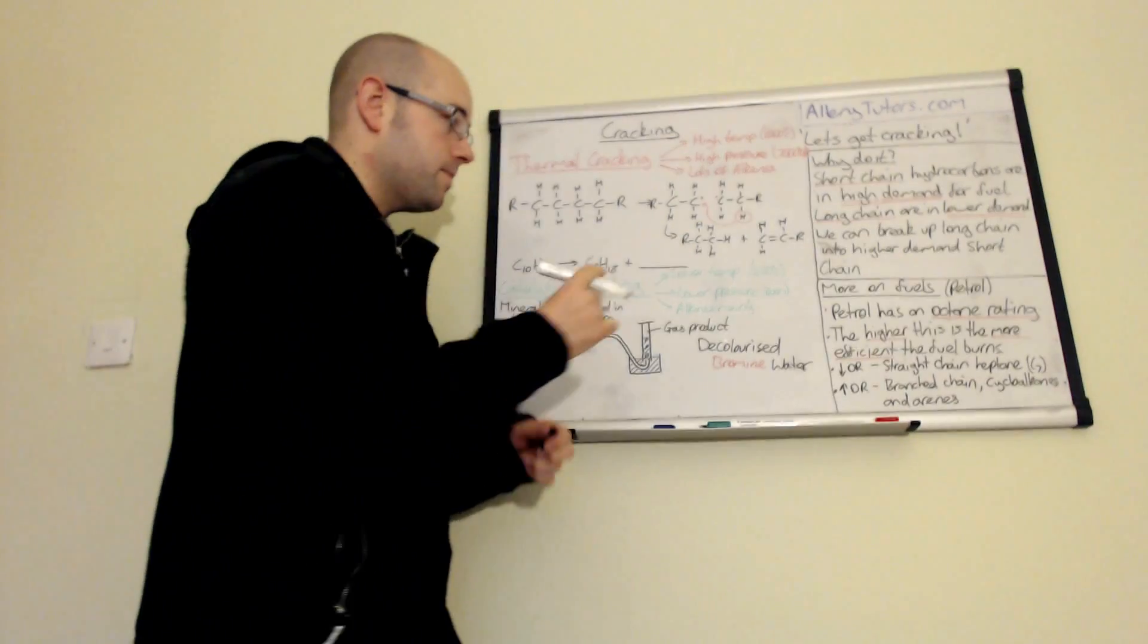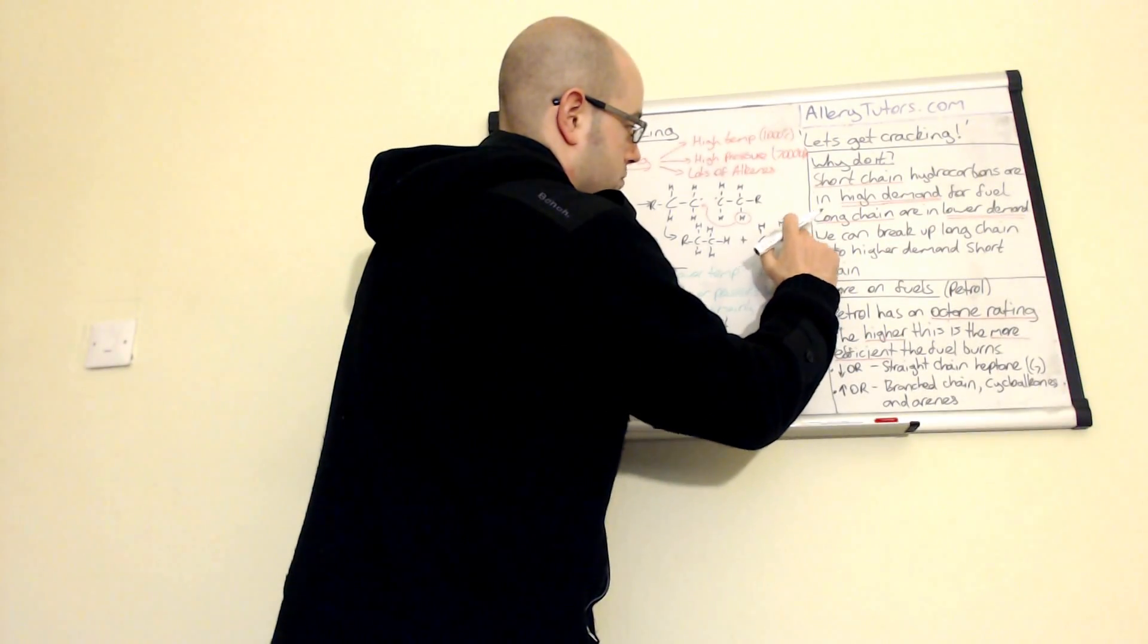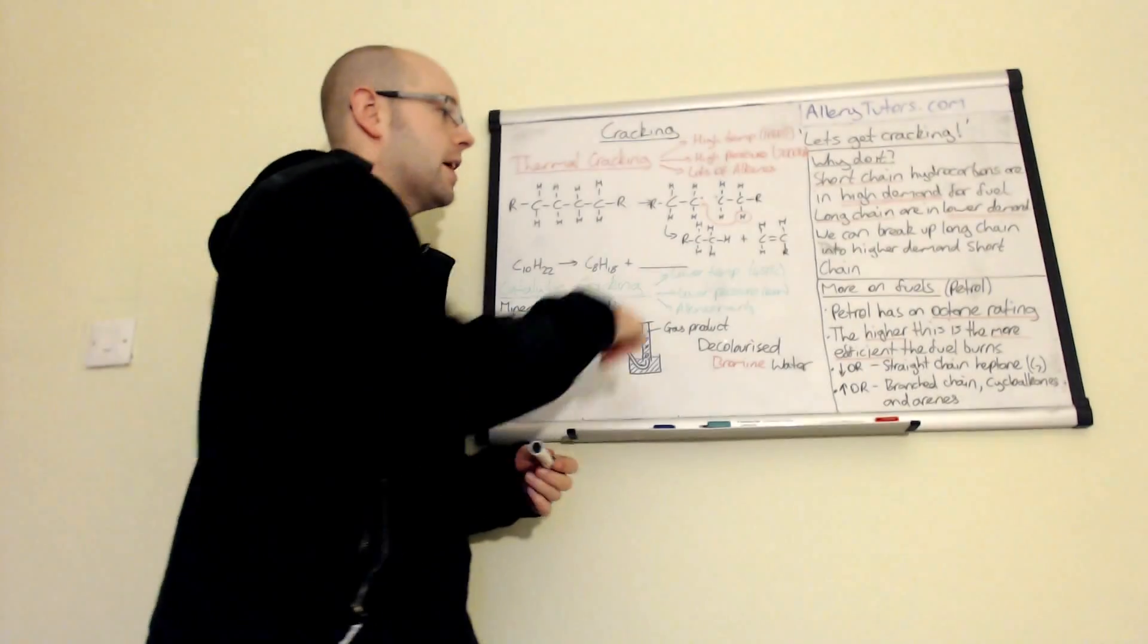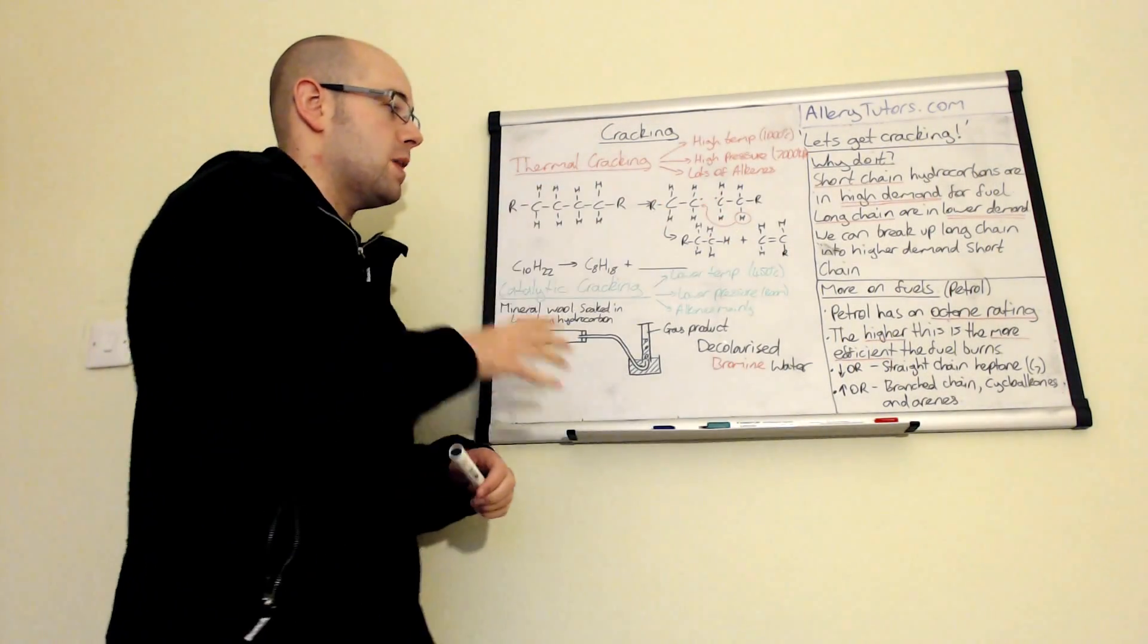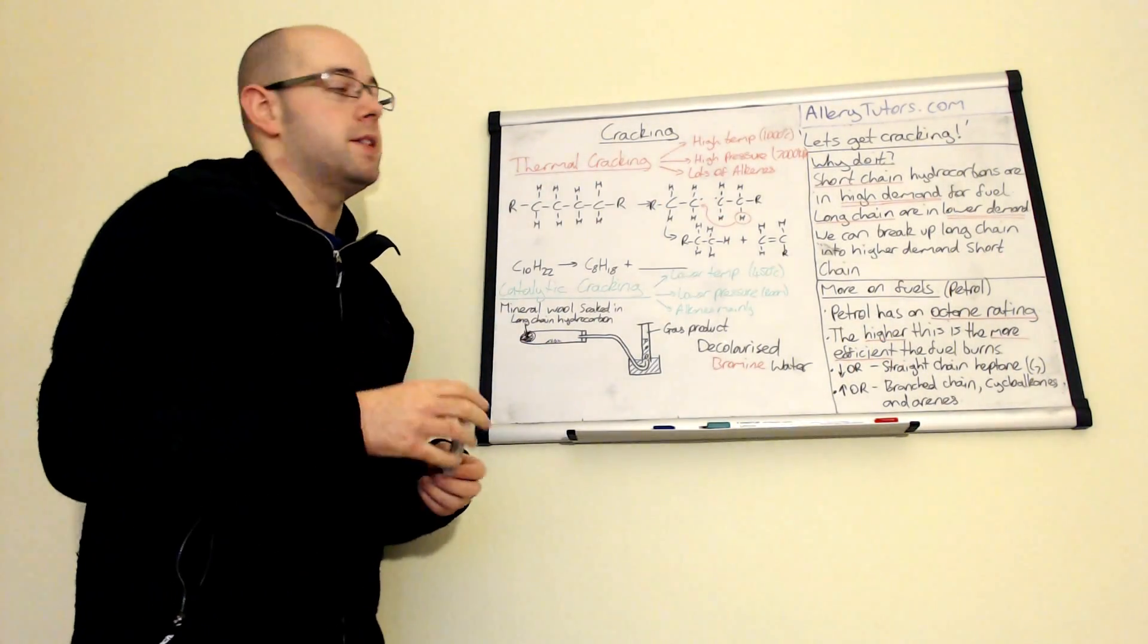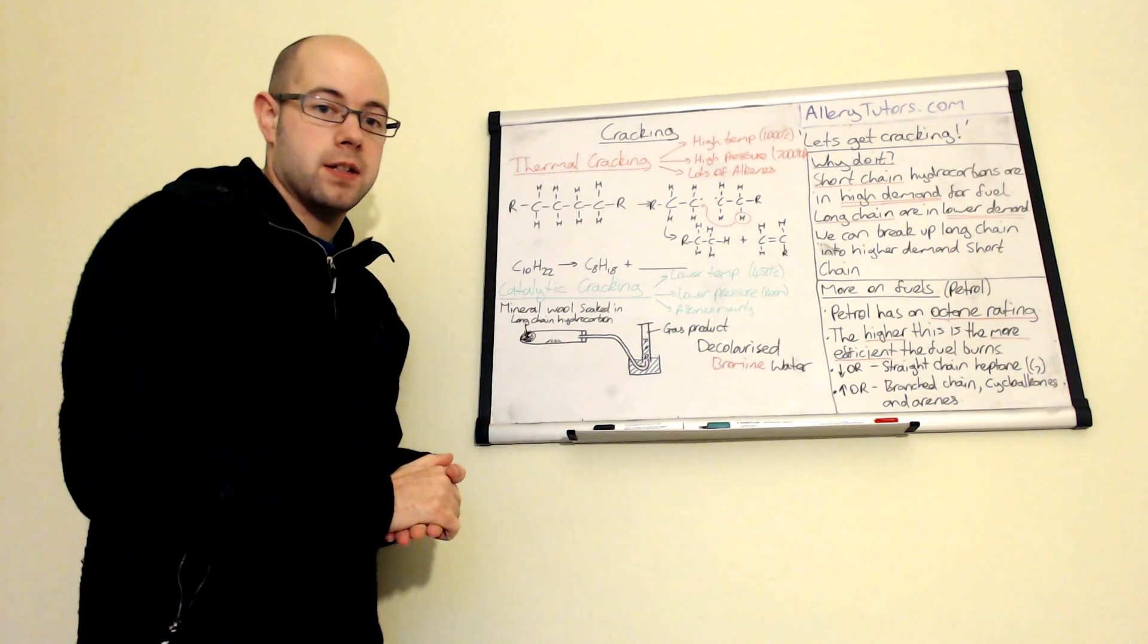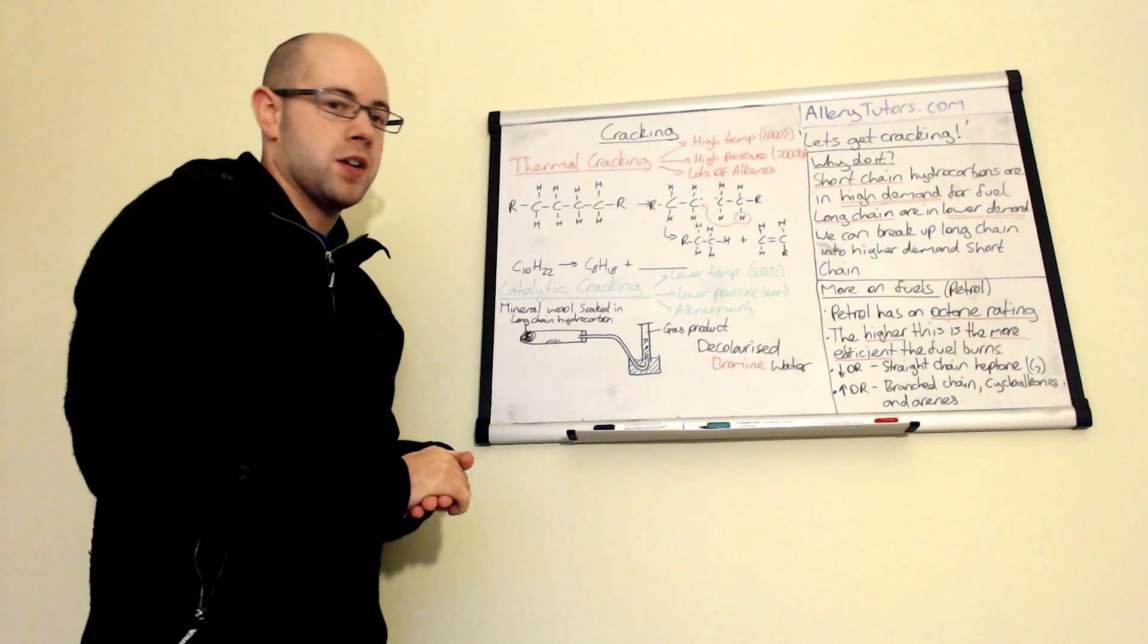So you can see you've formed an alkane and an alkene. But this process mainly produces alkenes. The way the molecule breaks up, you tend to form more alkenes than alkanes. This is very useful for plastic manufacturing.